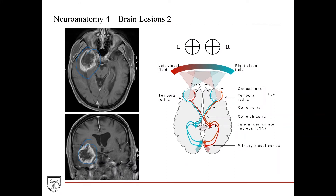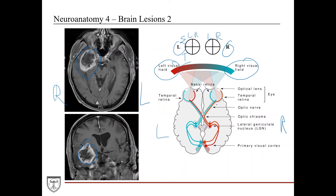This is a right temporal lobe mass. Walking through the visual pathway: at the retina level, the outer portion receives inputs from the inner visual field and vice versa — a crisscross arrangement. Fibers then travel in the optic nerve to the optic chiasm, where some fibers cross over. After the chiasm, fibers travel in the optic tract and then synapse at the lateral geniculate nucleus, or LGN, where they split.